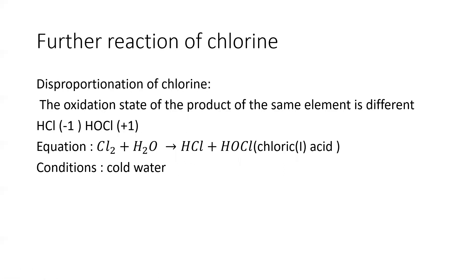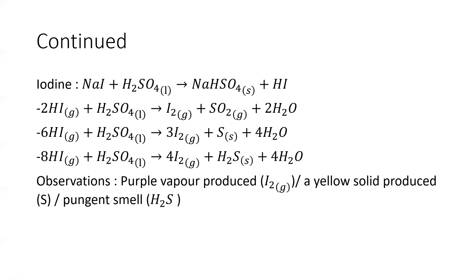Further reactions of chlorine: chlorine undergoes disproportionation, where the product has two different oxidation states. Chlorine reacts with water to produce HCl (Cl at −1) and chloric(I) acid, HOCl (Cl at +1). The condition for this is cold water.